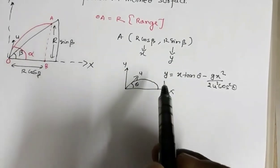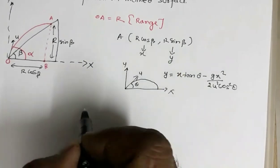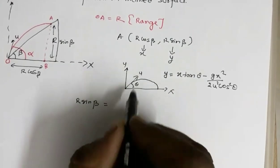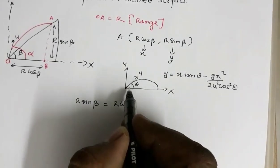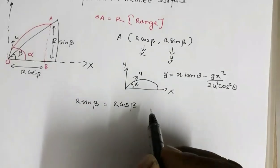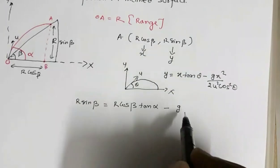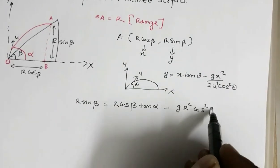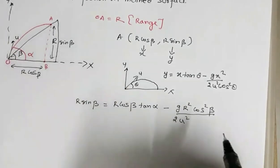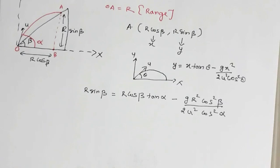In our case, y equals r·sin(beta) and x equals r·cos(beta). Substituting, we get: r·sin(beta) = r·cos(beta)·tan(alpha) minus g·r²·cos²(beta) divided by 2u²·cos²(alpha), since theta in our case is alpha.